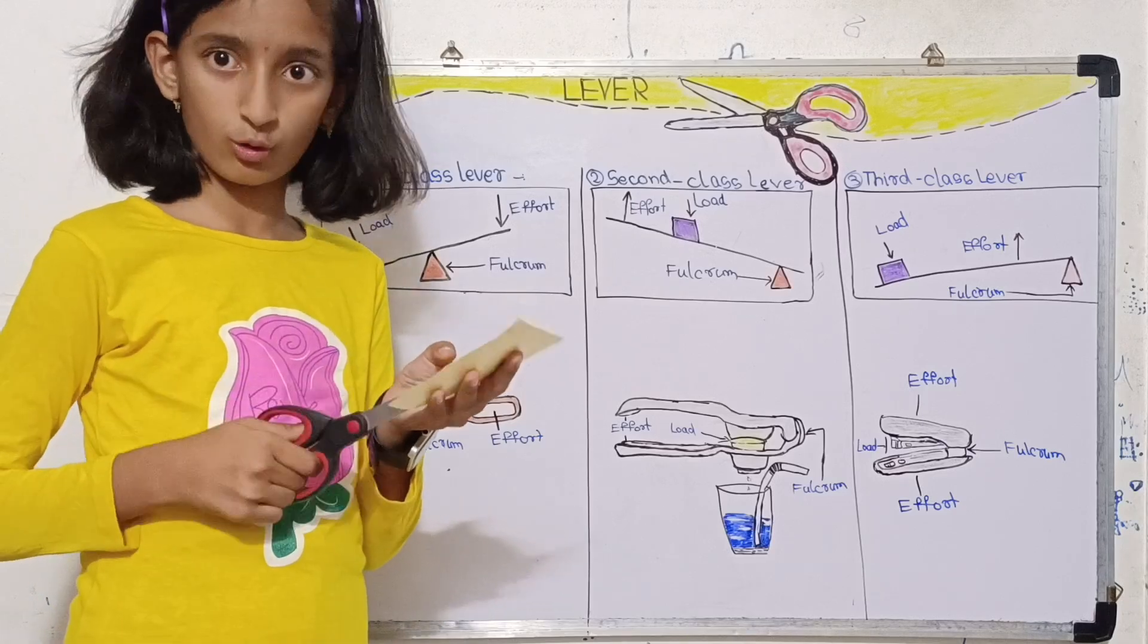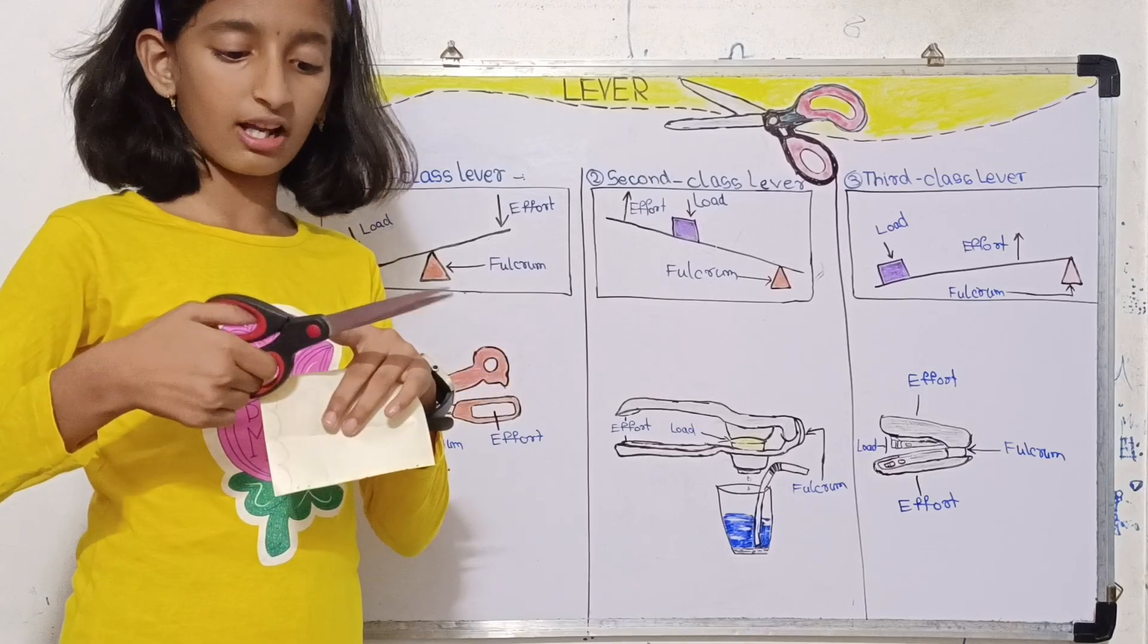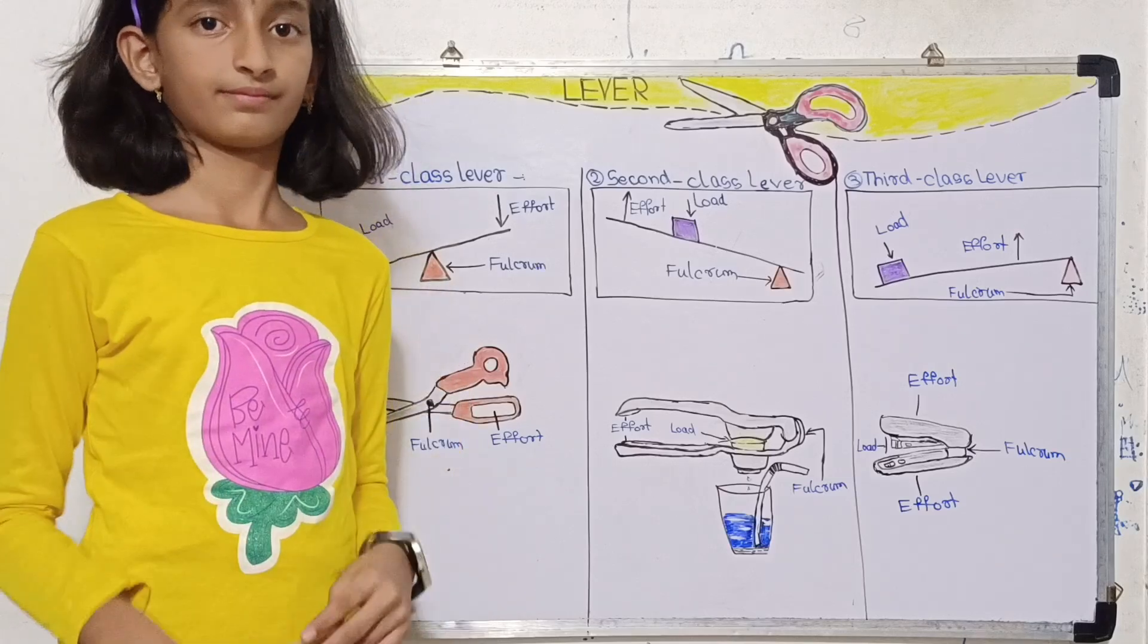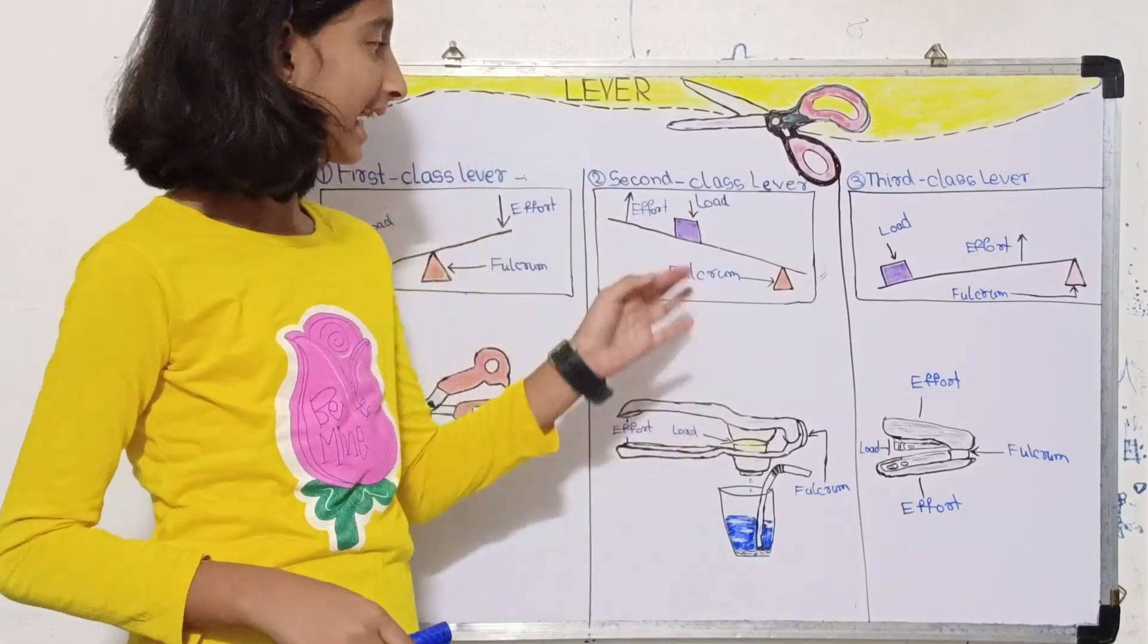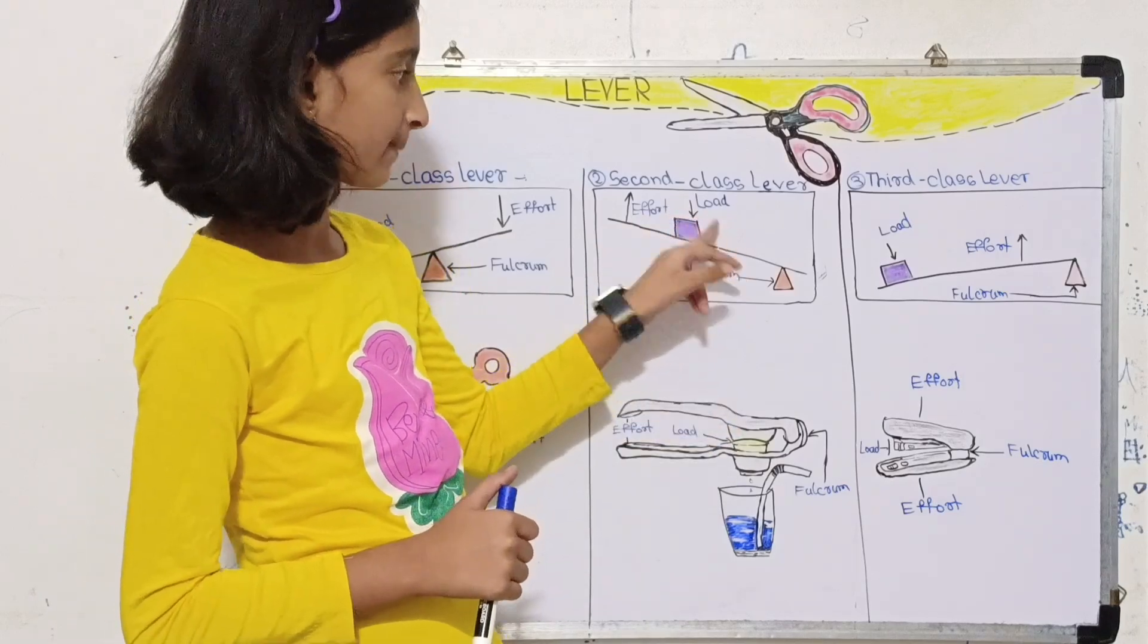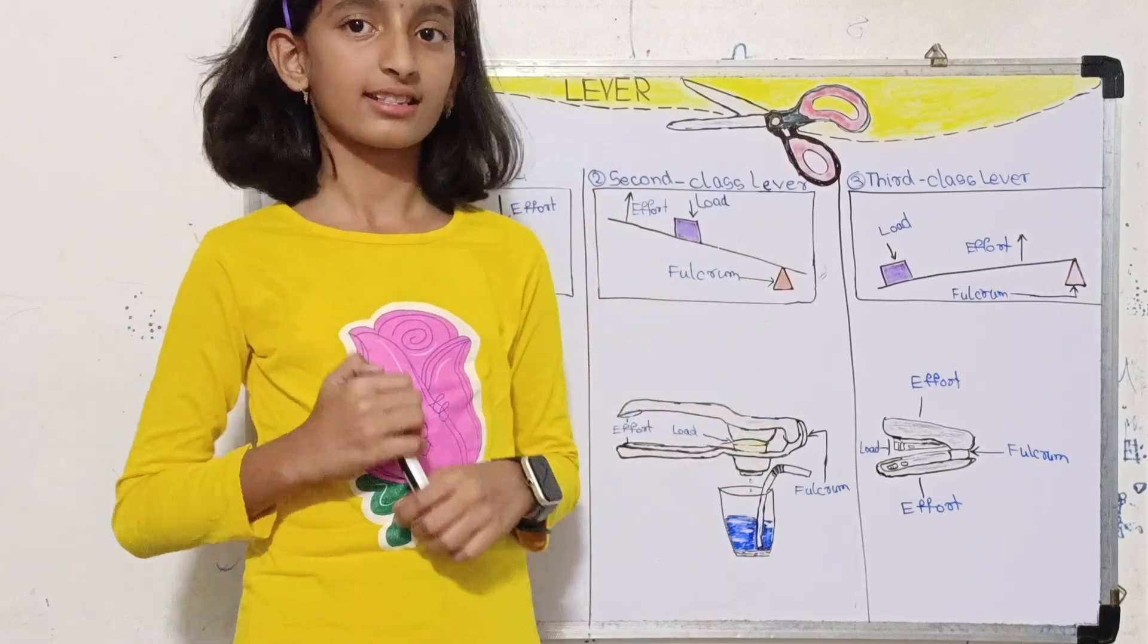The fulcrum is allowing us to move the other sides and keeping this fixed. Now second class lever. In this, the load is between the effort and the fulcrum.